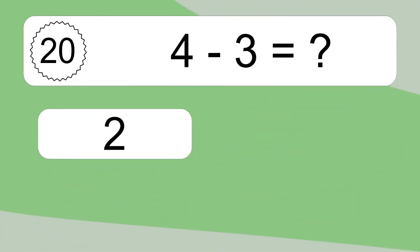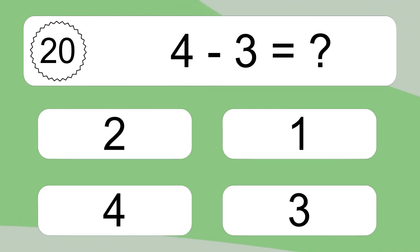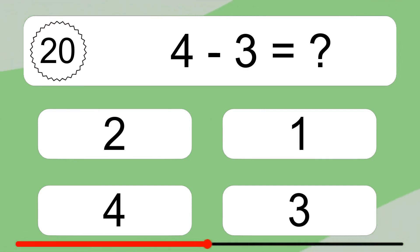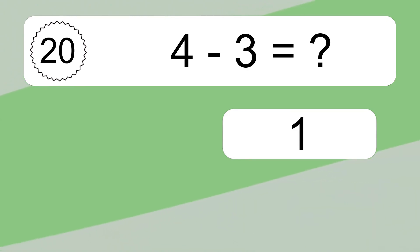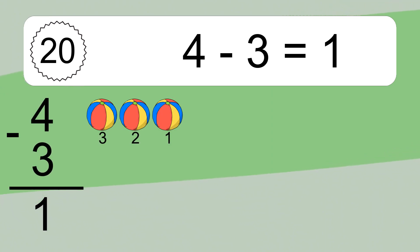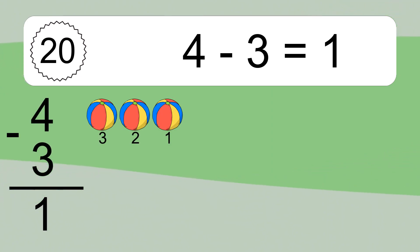4 minus 3 equals what? 4 minus 3 equals 1. Let's count it. 3, 2, 1.